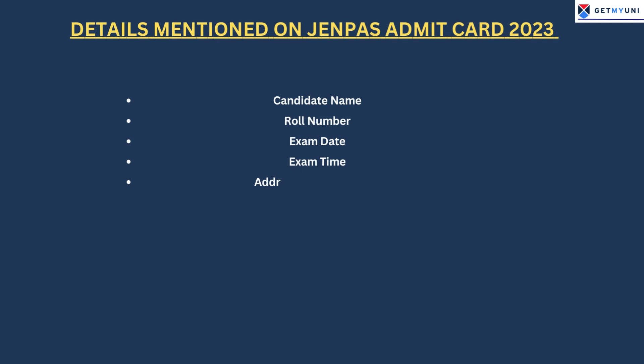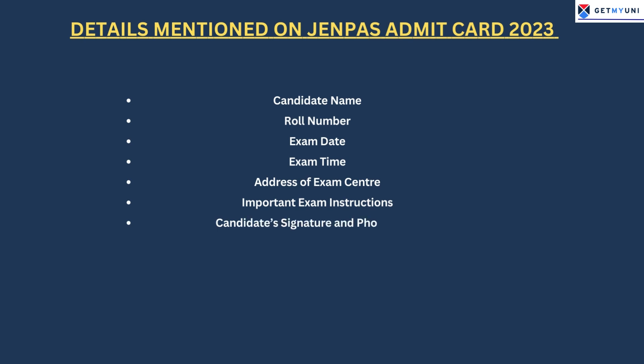The admit card includes: Candidate Name, Roll Number, Exam Date, Exam Time, Address of Exam Center, Important Exam Instructions, and the Candidate's Signature and Photograph.